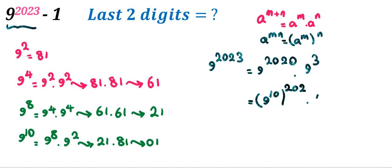9 cubed is 729, which is 29 last two digits. 9 to the 10 is 01, so the first part is 01, so it will be 29. Now it's 29 minus 1. The answer will be 28.